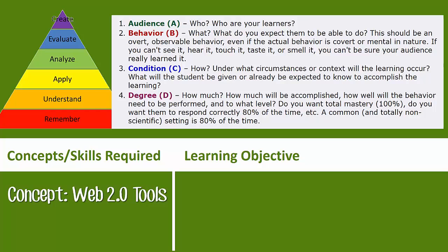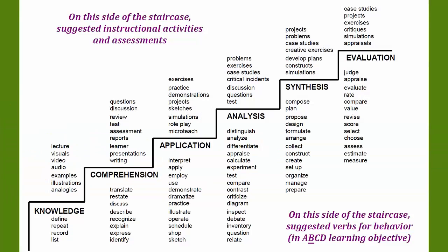My first concept is Web 2.0 tools. Looking at the A for audience — that's a given, my audience is always my students. Now I've got to think about the behavior, the most important part of a learning objective: what do I want students to be able to do, measured in some way? I'll reference a Bloom's resource. The levels are: know something, understand, apply, analyze, evaluate, and create — with synthesis wrapped into analysis and evaluation in the revised taxonomy.